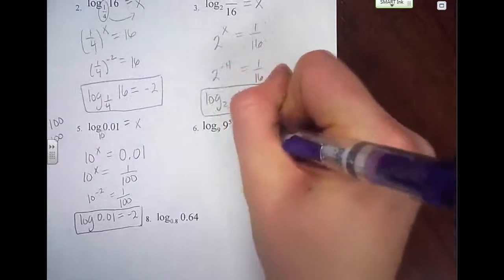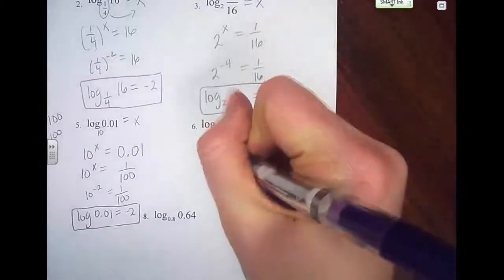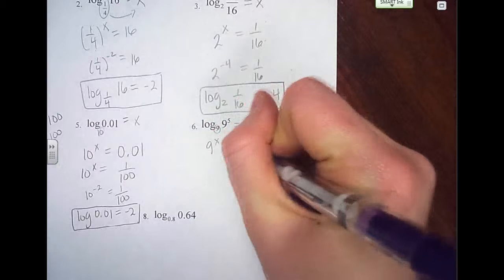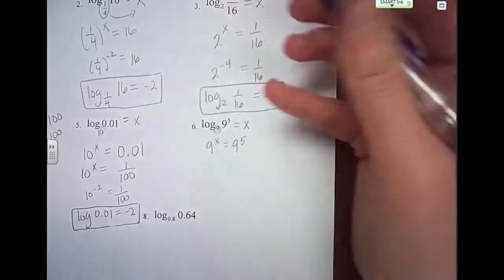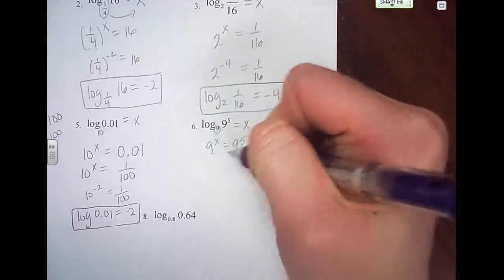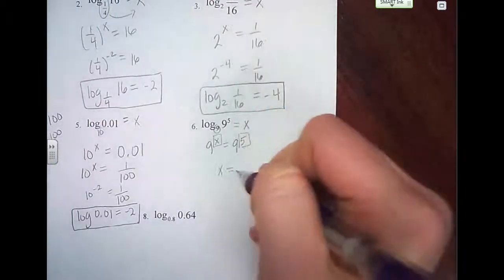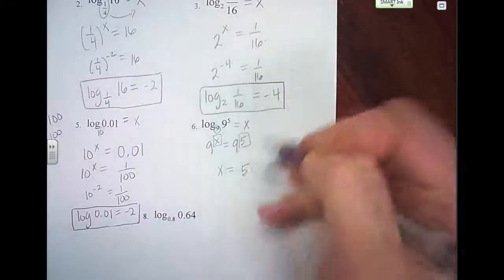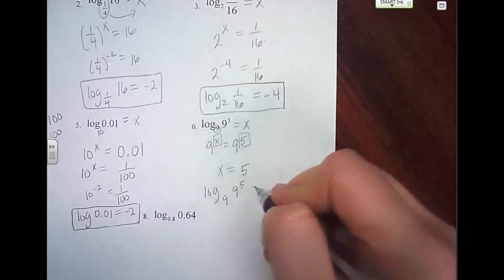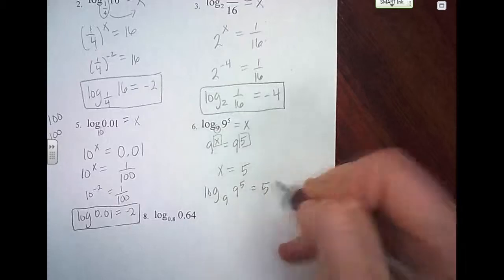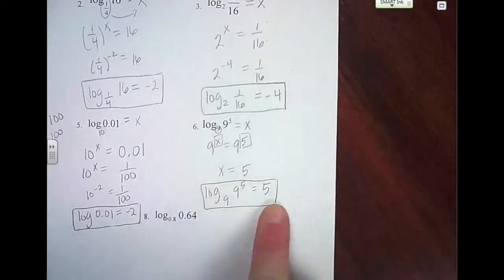Number 6: set it equal to x, start with your base. So 9 raised to what power equals 9 to the 5th? The bases are the same here, so we just look at the top part and it tells us x equals 5. So log base 9 of 9 to the 5th equals 5.